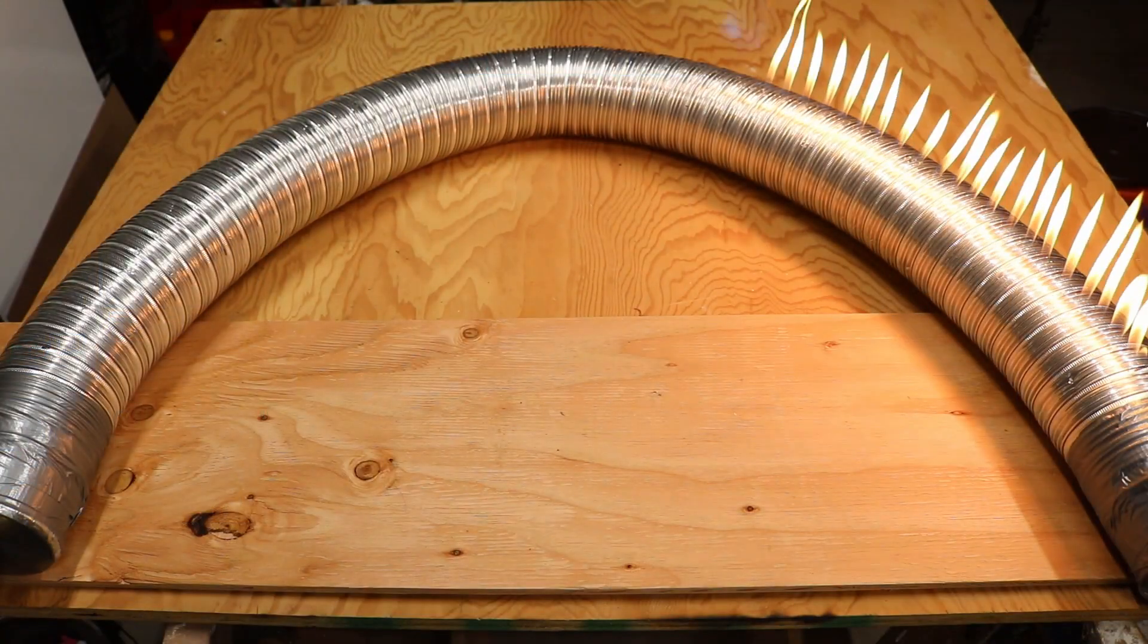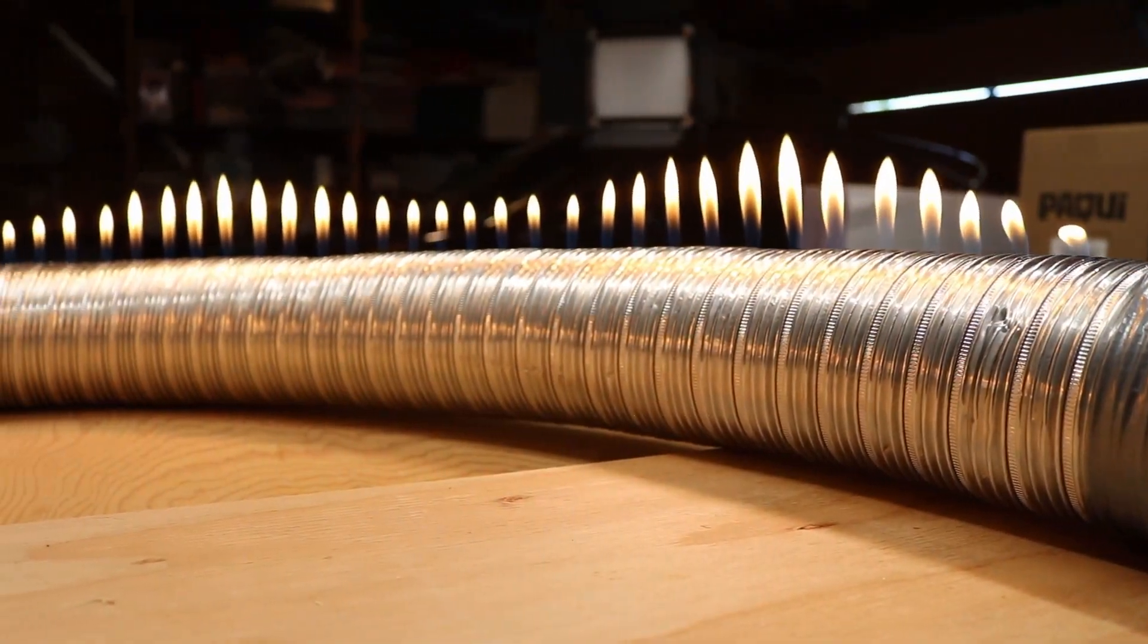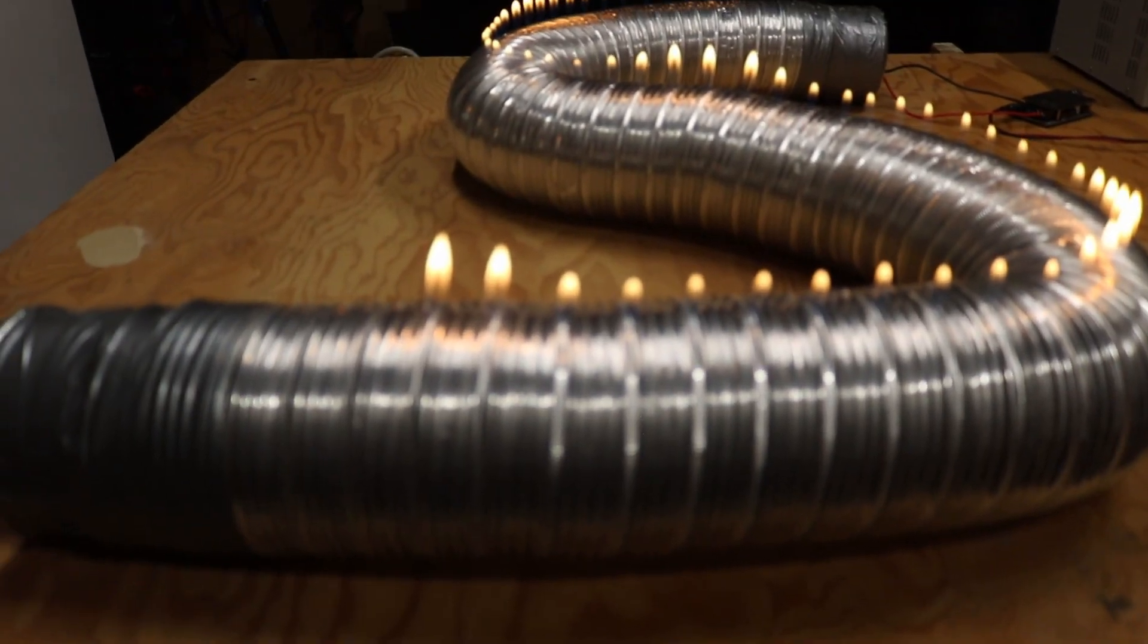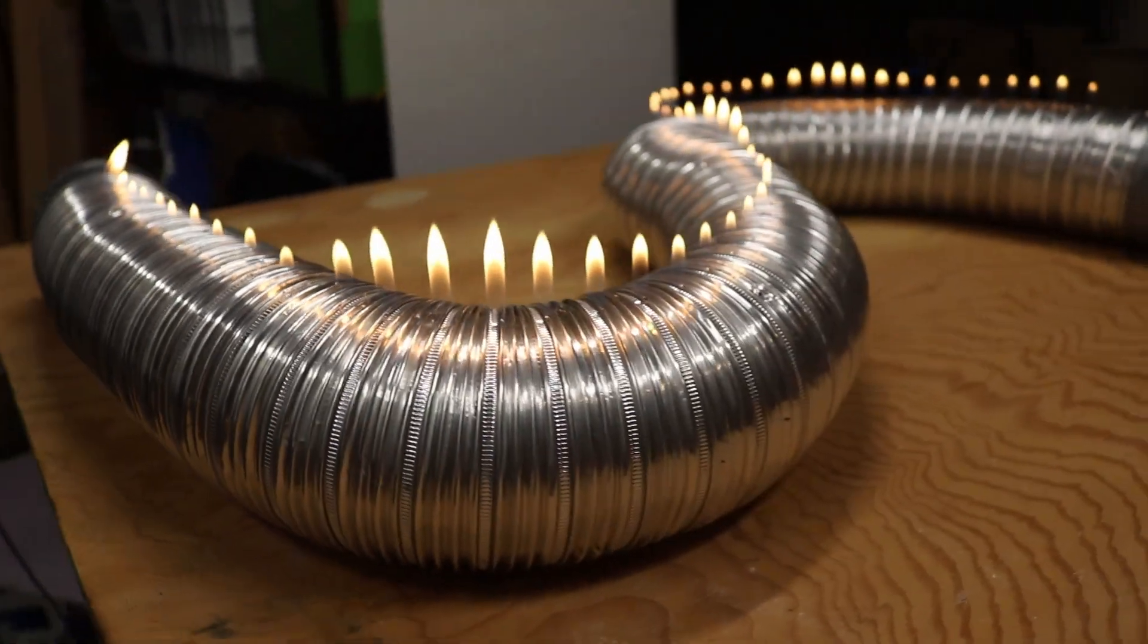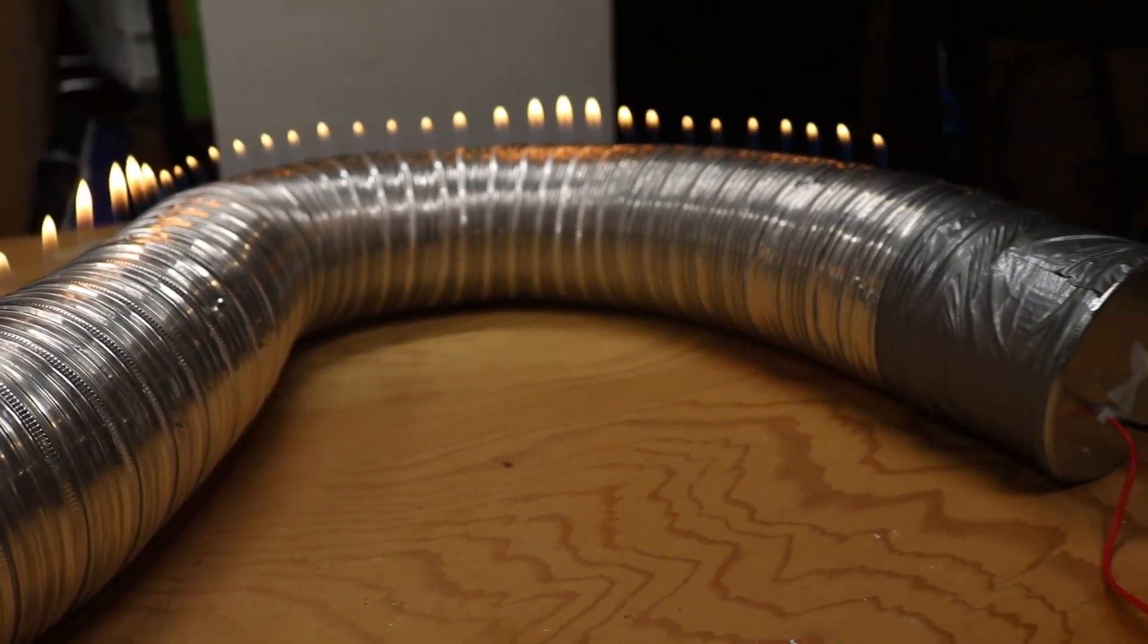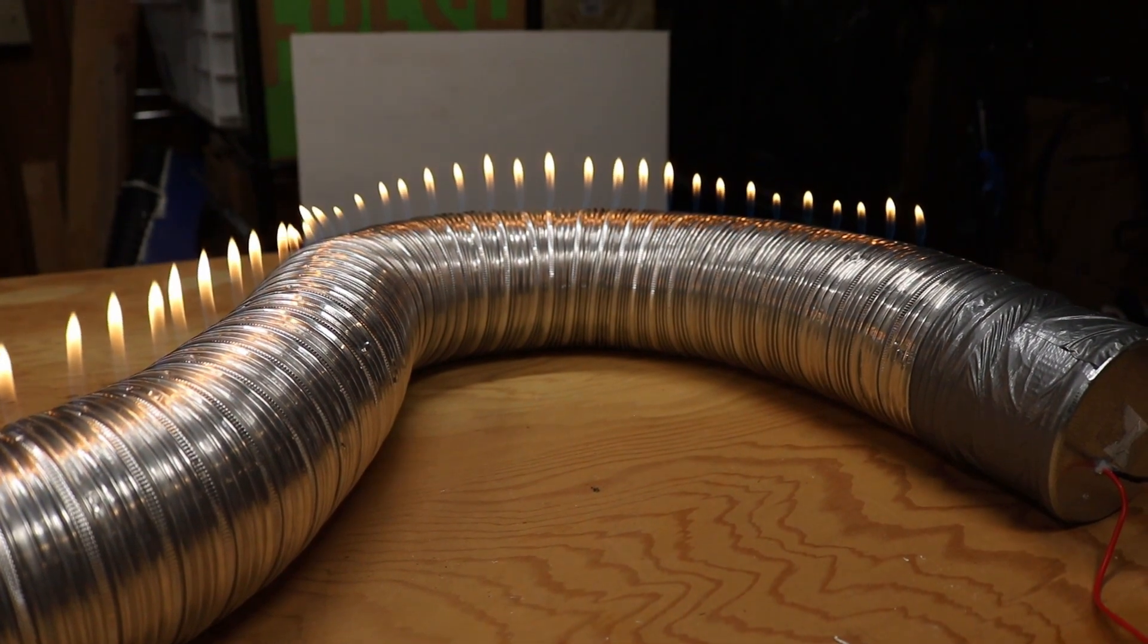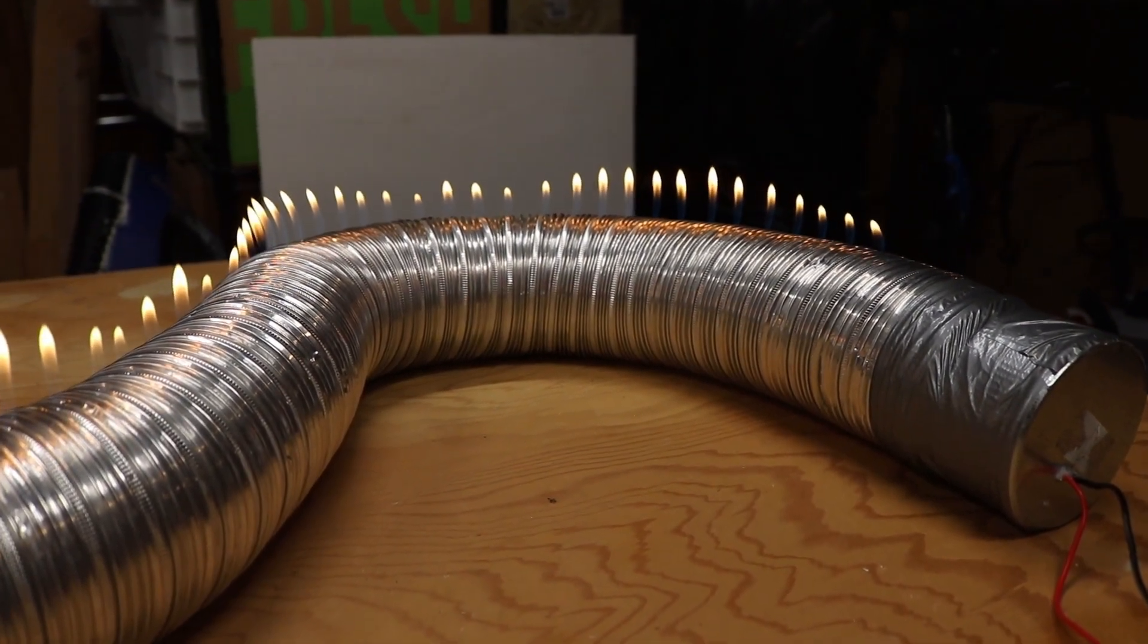So now we're going to test this as a flexible Rubens tube—one with a bend in it, quite an aggressive curve making a full U. Okay, we are still getting some modulation along the curved path. This is pretty exciting. As you can see, there's variation in the flame height and various points in the tube. It's definitely much less pronounced with the curves in the tube, but it's still present. You can see the flame change as the frequency of the tone changes. Here we go, there's another one.